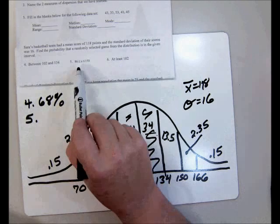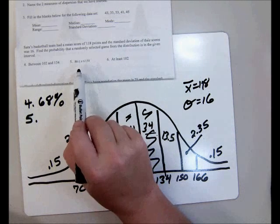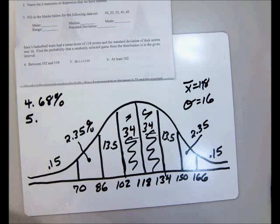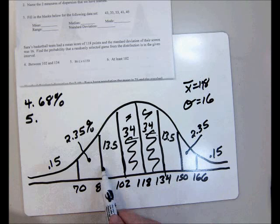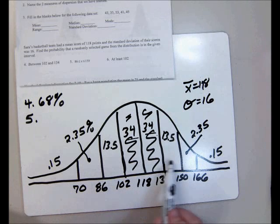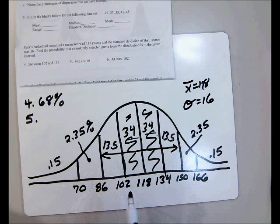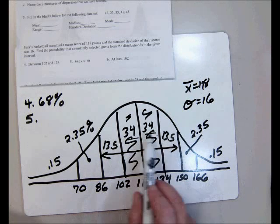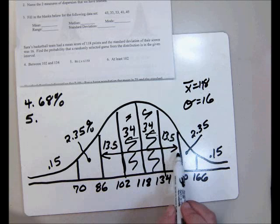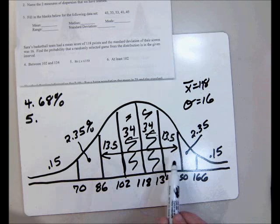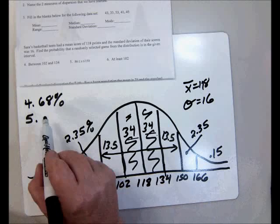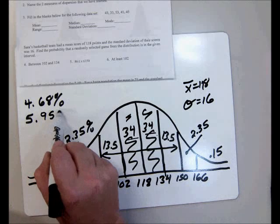Number five. Notice the notation here. Has an x in the middle there. So that means the same thing as number four. X is between 86 and 150. So 86 to 150 is this area here. Now we can add all of these up. But I know that because that's two standard deviations to the right and left, following the empirical rule, that is 95% of the data.